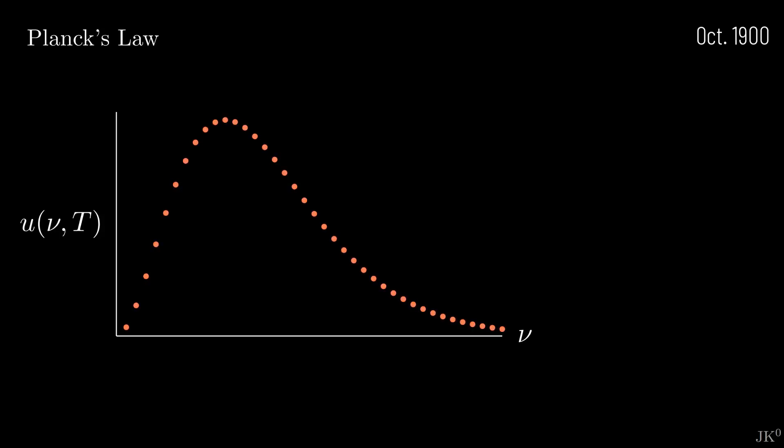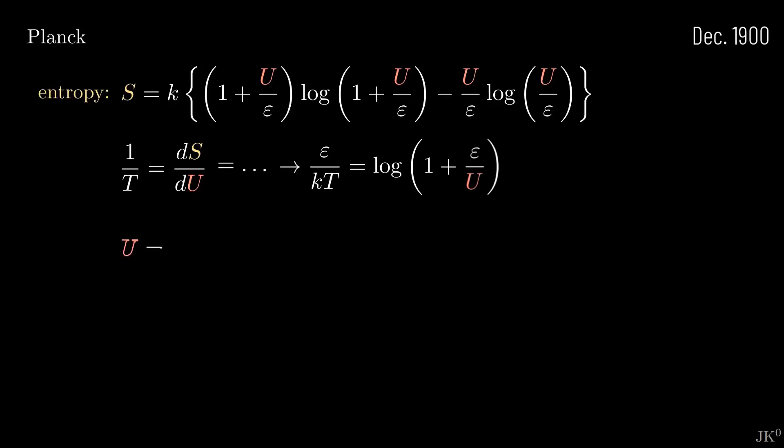When Max Planck solved the mystery of black body radiation in 1900, he used a mathematical trick. He later spent two months searching for a physical justification and realized that the only possible way was by introducing the idea that the radiating material and radiation exchange energy in discrete amounts given by h times nu, where nu is the frequency and h is a new fundamental constant we call today Planck's constant.